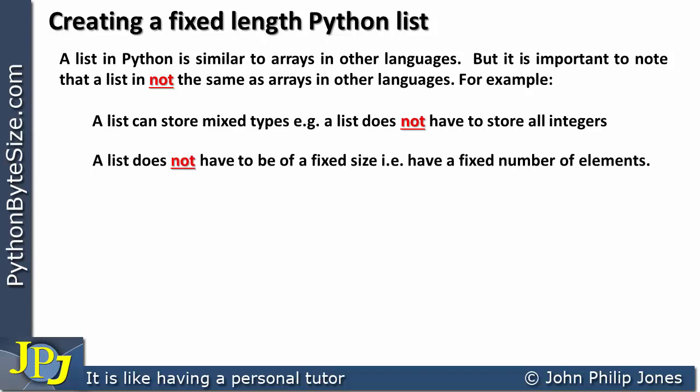A list does not have to be of a fixed size, i.e. have a fixed number of elements. A list can grow and shrink at runtime as is needed.